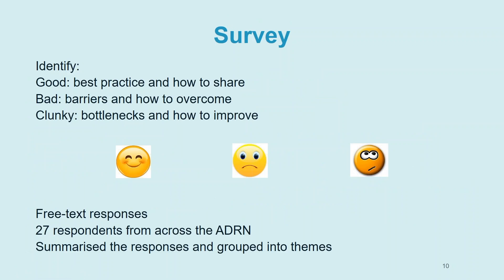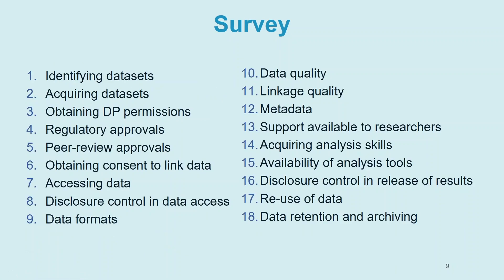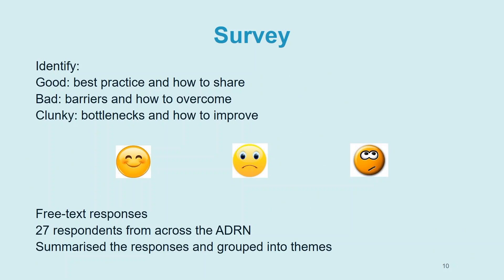For each of those 18 topics, the survey asked three things: what's good, what's bad, and what's clunky — and how can we deal with it? The information was provided as free text responses, which generated a lot of information, but we felt that would give us a richer data set to analyse than a Likert scale, allowing us to really drill down into what people were thinking.